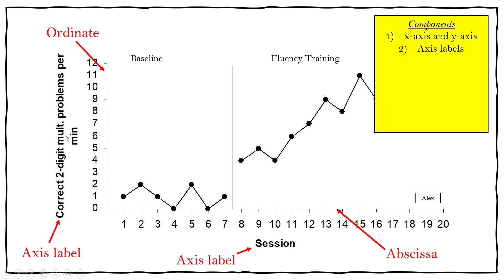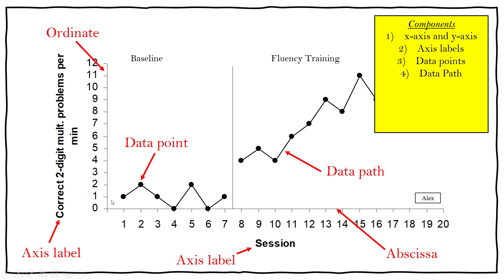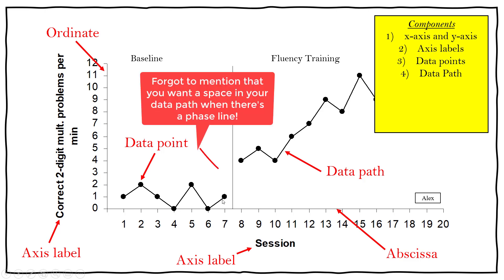Your y-axis is the vertical line on the left side of your graph. The y-axis identifies the target behavior and the kind of data being reported. In this specific example, the data are on two-digit multiplication problems measured in problems per minute, which tells us that researchers are measuring rate. You also need data points, which show the measurement of the target behavior per session or per day.